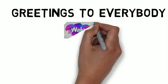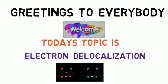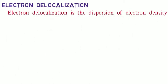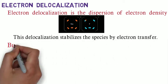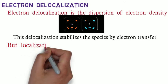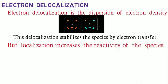Greetings to everybody. Today's topic is electron delocalization. Electron delocalization is the dispersion of electron density. The dispersion of electron density stabilizes the species, but the localization of electron density increases the reactivity of the species.